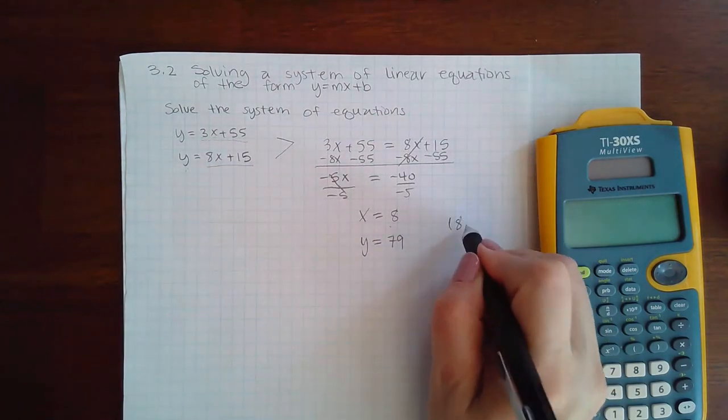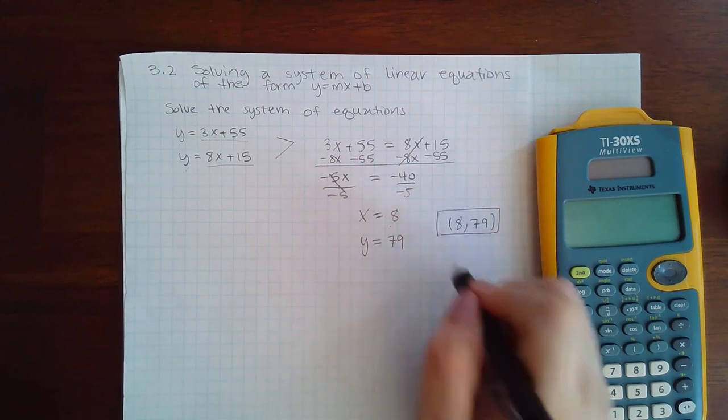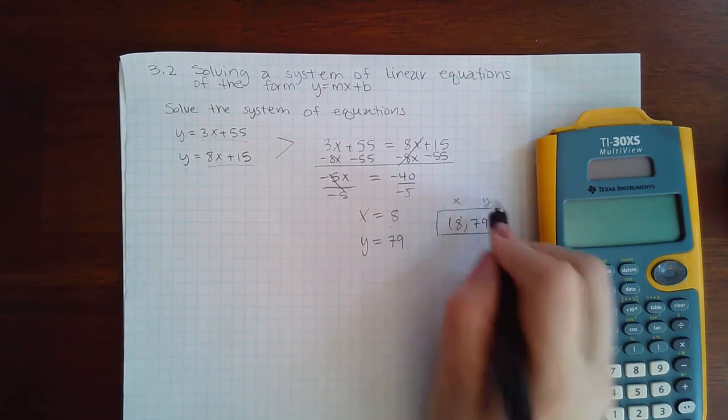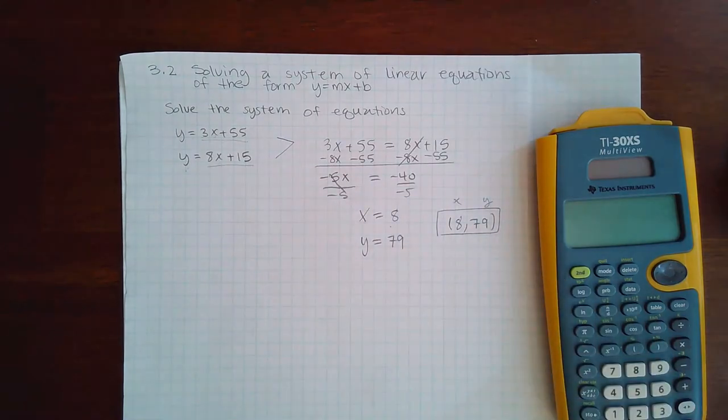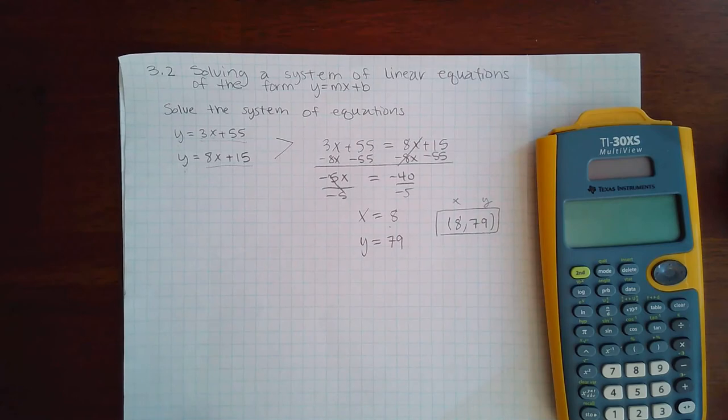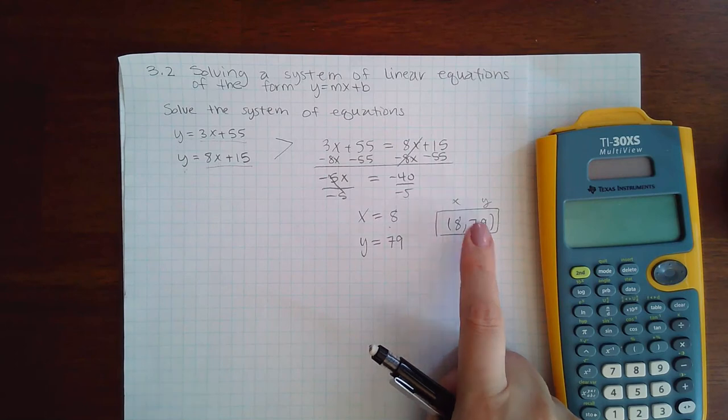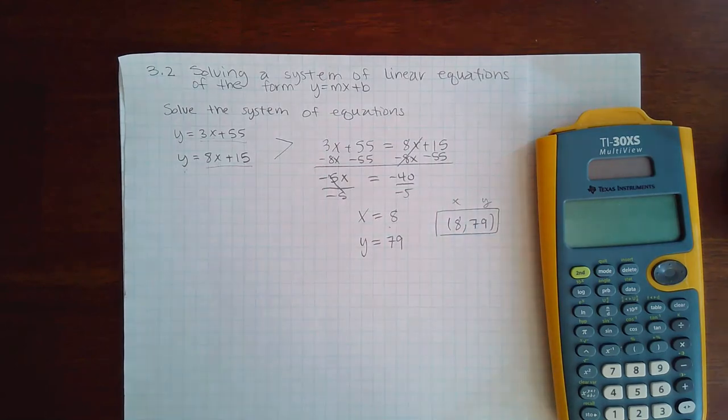the answer here would be (8, 79) - the x coordinate comma the y coordinate. That is the point at which these two graphs intersect. I can find it algebraically without having to actually graph them. You wouldn't be able to do that easily because you would have to go all the way up to 79 in order to see where it intersects. So having another method is definitely useful.